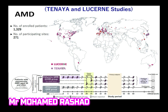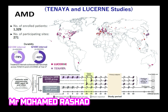For age-related macular degeneration, recent global clinical studies support the non-inferiority and efficacy of this medication — known as the Tenaya and Lucerne studies. These studies not only prove the efficacy but also the safety and durability of the medication. After two years, 78% of patients can be extended to a 12-week interval, and 63% can be extended to 16 weeks.